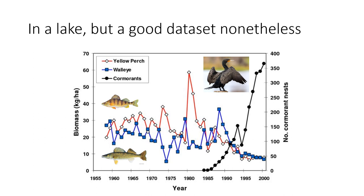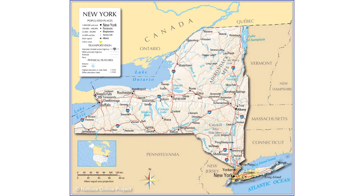I know this example isn't from a stream, but it shows really strong impact. Here's a cormorant introduction into a lake. You can see when cormorants arrived, and immediately the large fish in the system start to decline — moving from erratic, higher abundances to very low and relatively stable abundances. That occurs very quickly. There's a shift from very high variability in large fish to much lower variability, and much lower abundance. And this is less than 400 nests — fewer than a thousand birds — impacting what is, as you can see on the map, a pretty big lake. A thousand cormorants having that effect on the landscape is amazing.